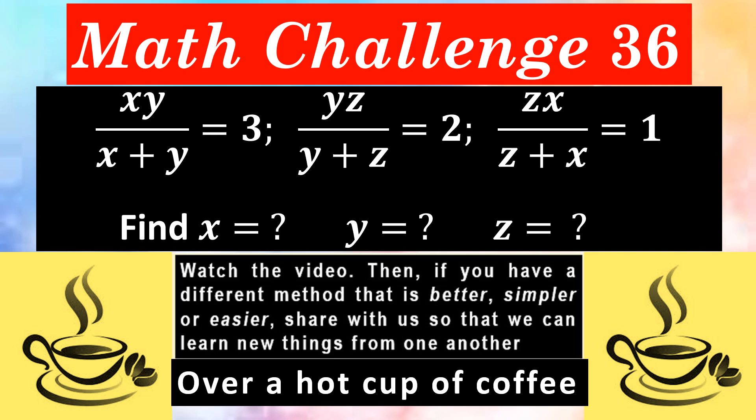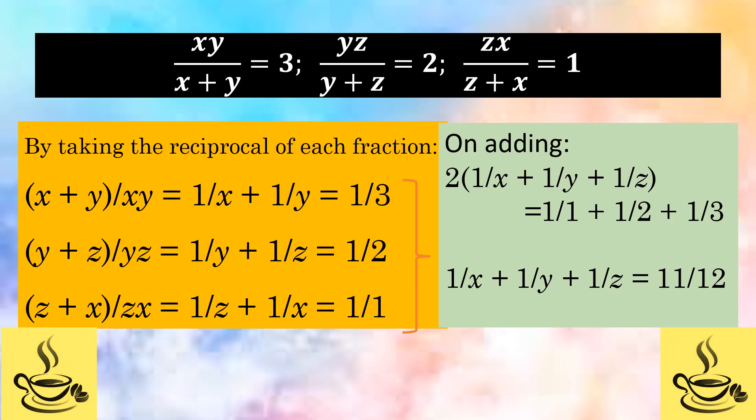Do not cross-multiply, it would prove too complicated and time-consuming. We have a much better method called Invertendo. Take the reciprocal of each, that is, Invertendo of each ratio.